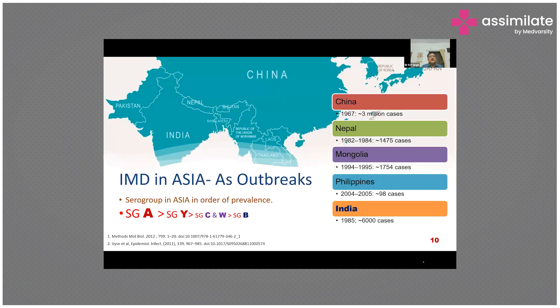In Asia, the disease is often recognized in outbreak situations, well documented in the literature. Studies suggest serogroup A predominance, though other serogroups have also been reported. The listed countries on the slide show major IMD outbreaks in the last 60 years, including an outbreak in India in 1985.